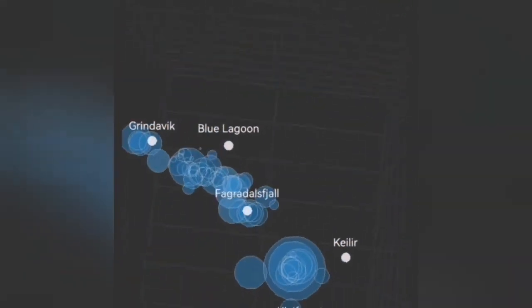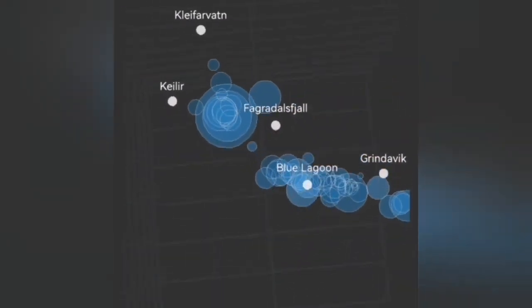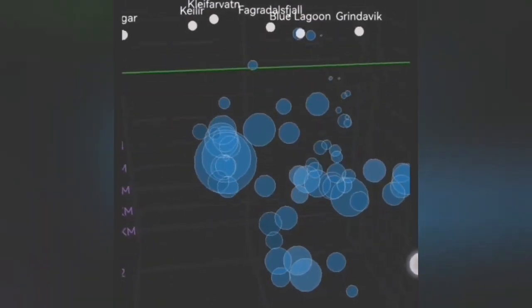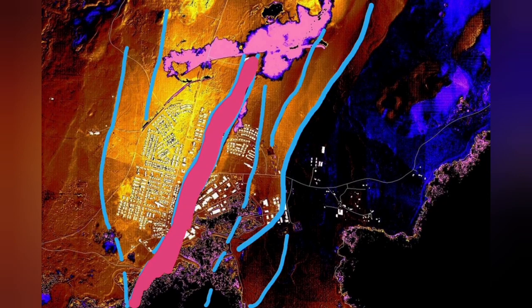Under the Grindavik itself we don't have much, but toward the sea now we have a new situation. Before that, we had it to the north of the Grindavik, in the Hagafell and Sundhnúkur, we had eruptions. In November we had the earthquake, then December eruption, and January again eruption.